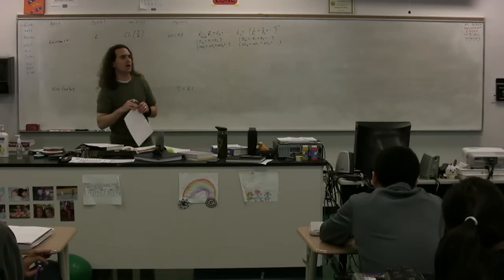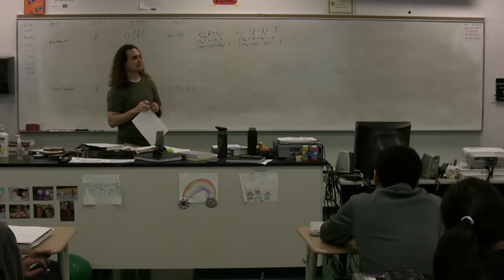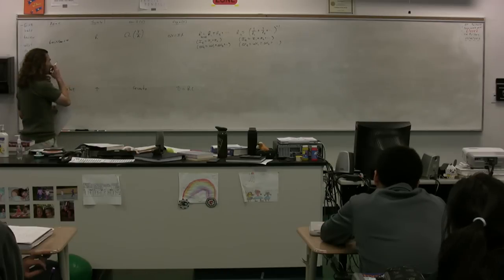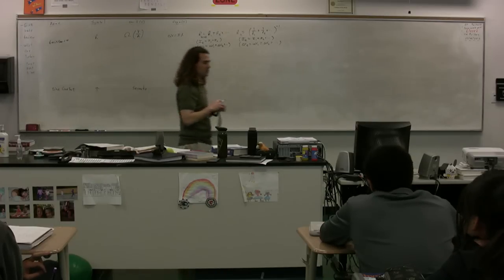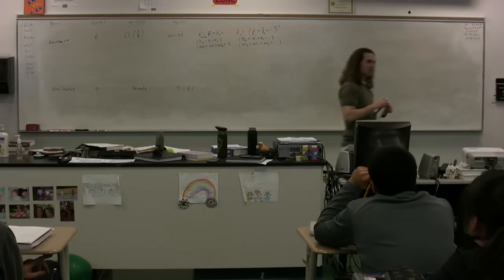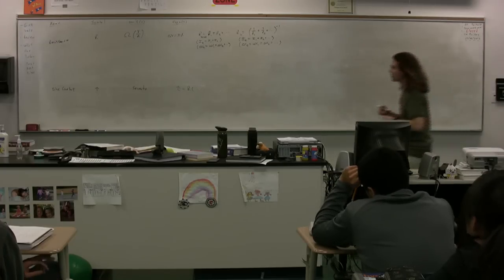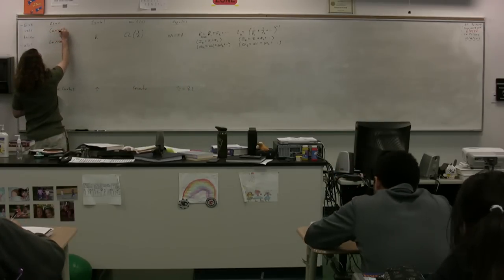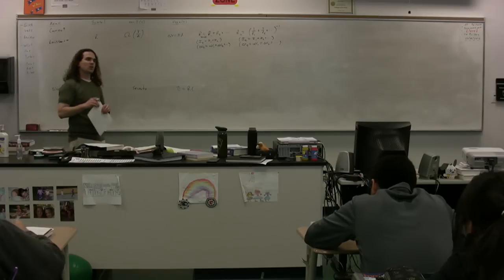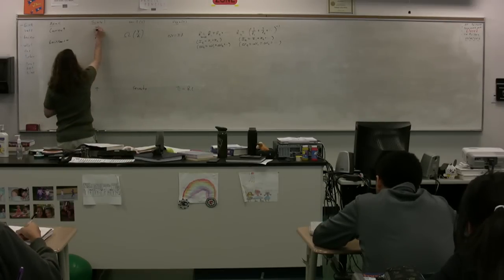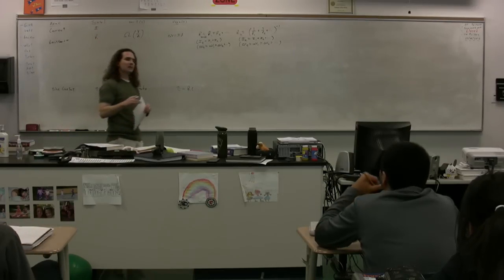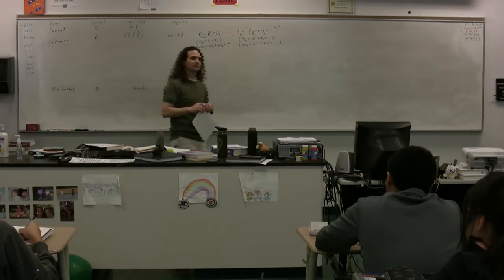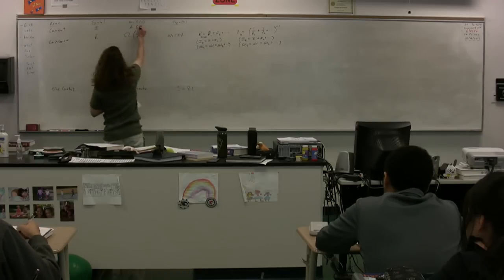Three more friends to add to our table. We'll start with current. The symbol for current is I. The dimensions for current are amps. An amp is coulombs per second.